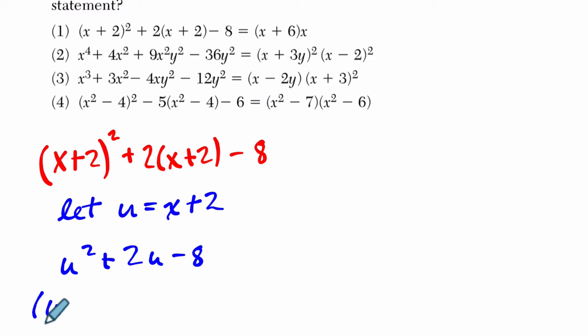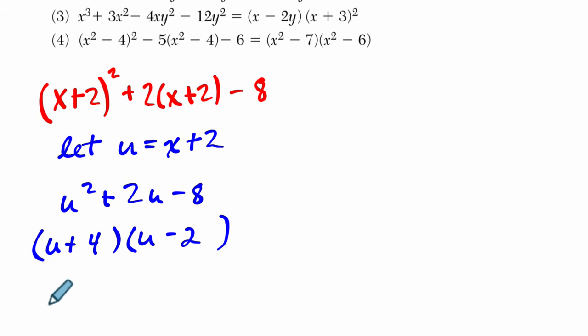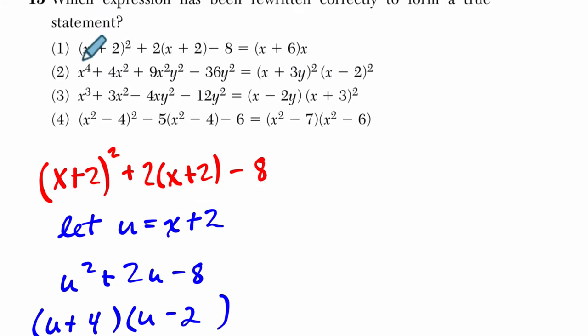We get two factors that multiply to negative 8 but add to 2. I'm going to say positive 4 and negative 2, and we're done. Just re-substitute the value of u back in, and we get (x+2+4) and then (x+2-2). And that would equal x+6 times x, and that's exactly what we have in choice 1.